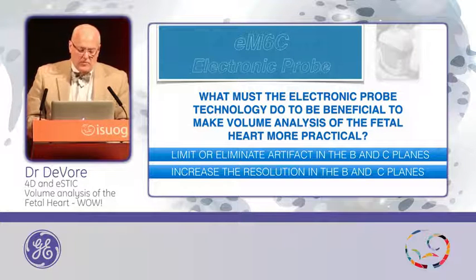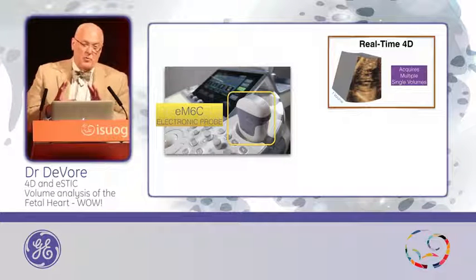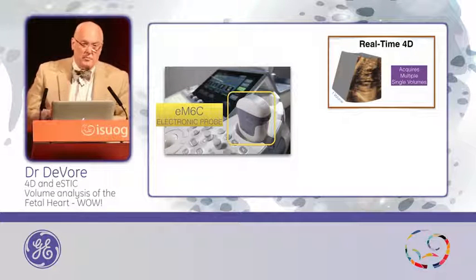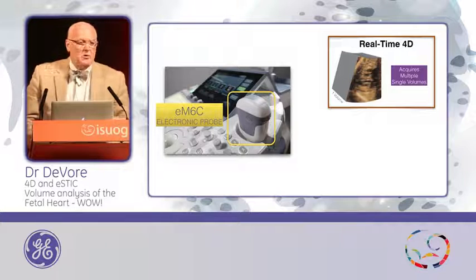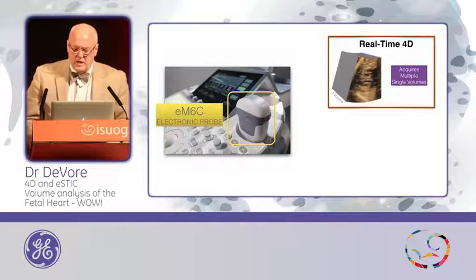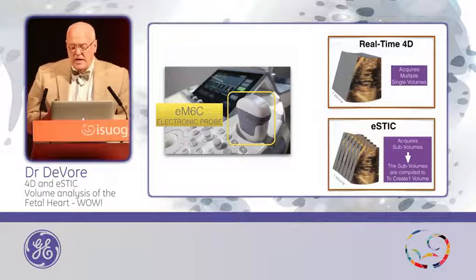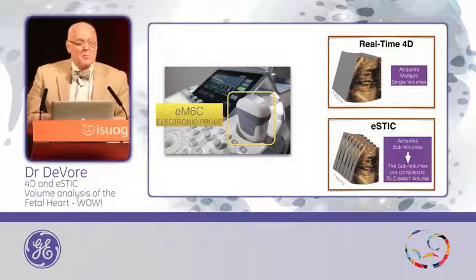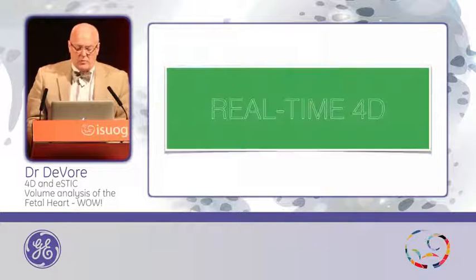Let's look at the two options this new probe offers. One is real-time 4D. In the past with the previous mechanical probe, the real-time 4D was there, but the frame rate was so low that it was really not very useful. Secondly, it offers E-STIC — E meaning electronic. With E-STIC, we have a chance to acquire, over a shorter period of time, higher resolution images by accumulating what are called sub-volumes to create the volume that we're going to analyze.